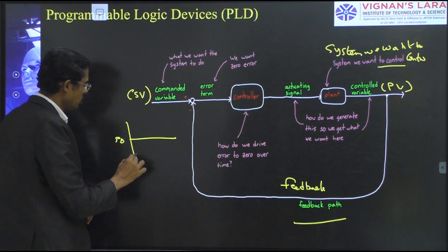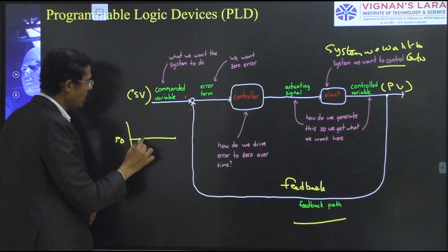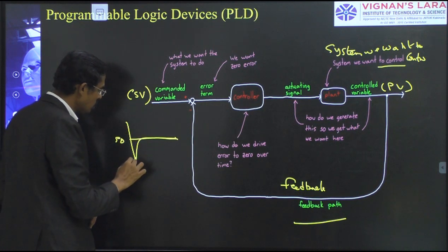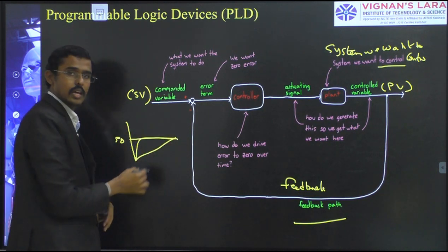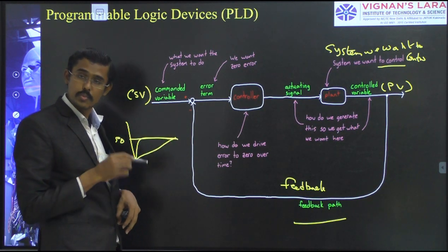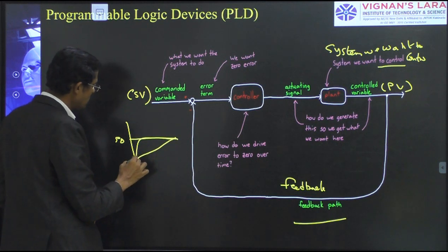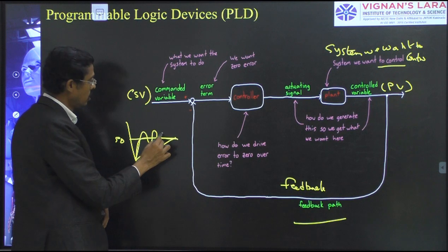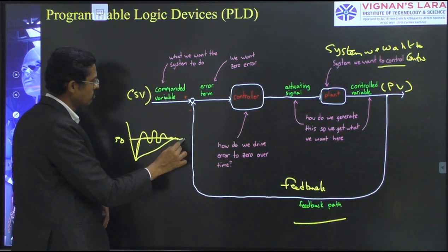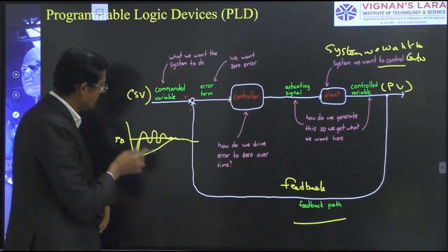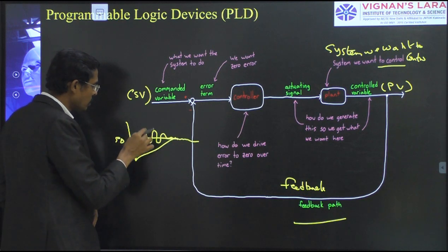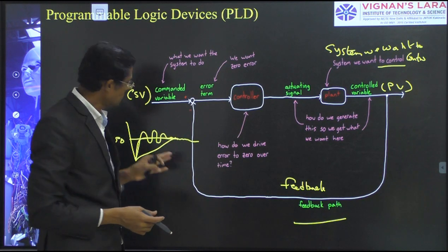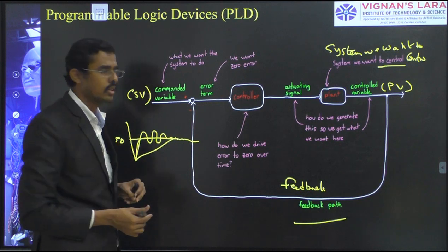The error should be zero — not just minimum, but zero. No fluctuations should be there. The system should not respond slowly; I need an immediate, quick process. I want the speed to go directly to 50 and stay there, with no oscillations. Continuous monitoring is needed to achieve this fixed, error-zero process.